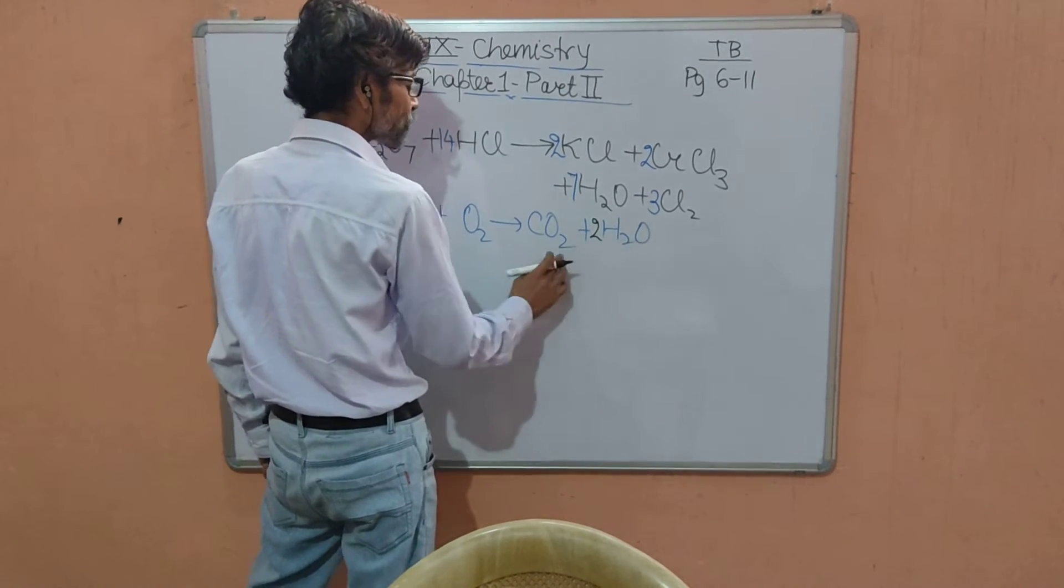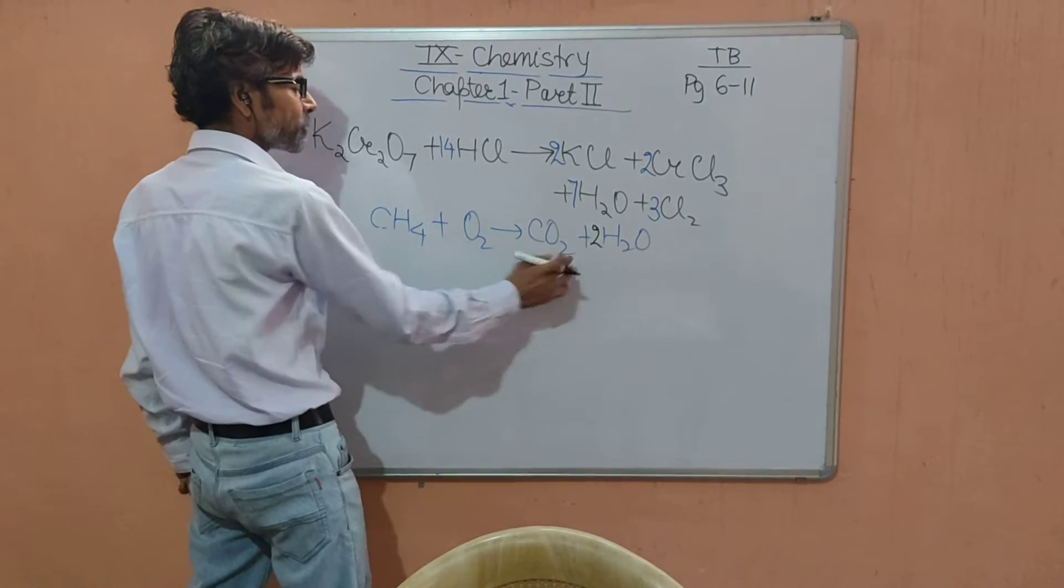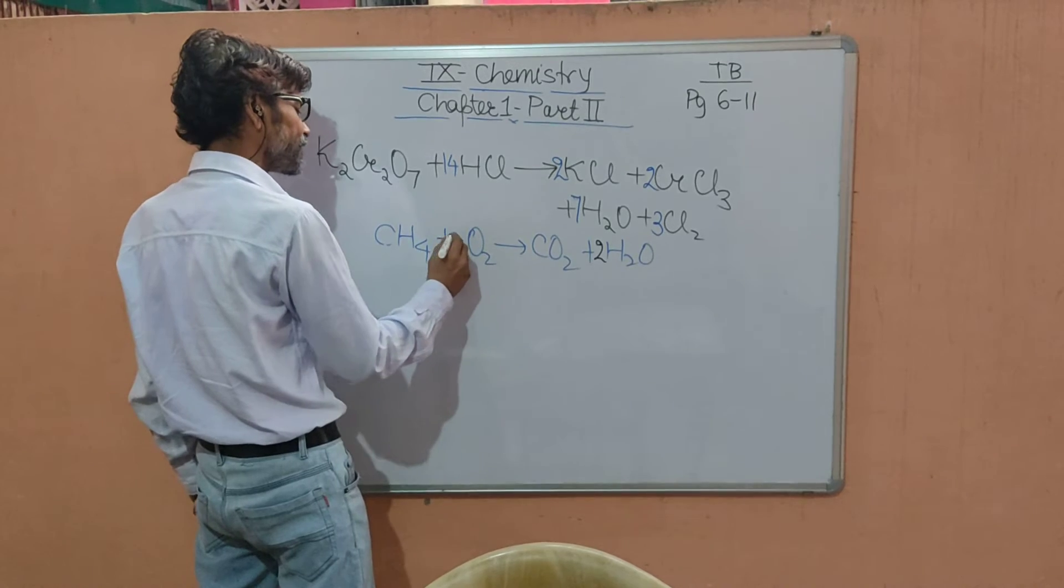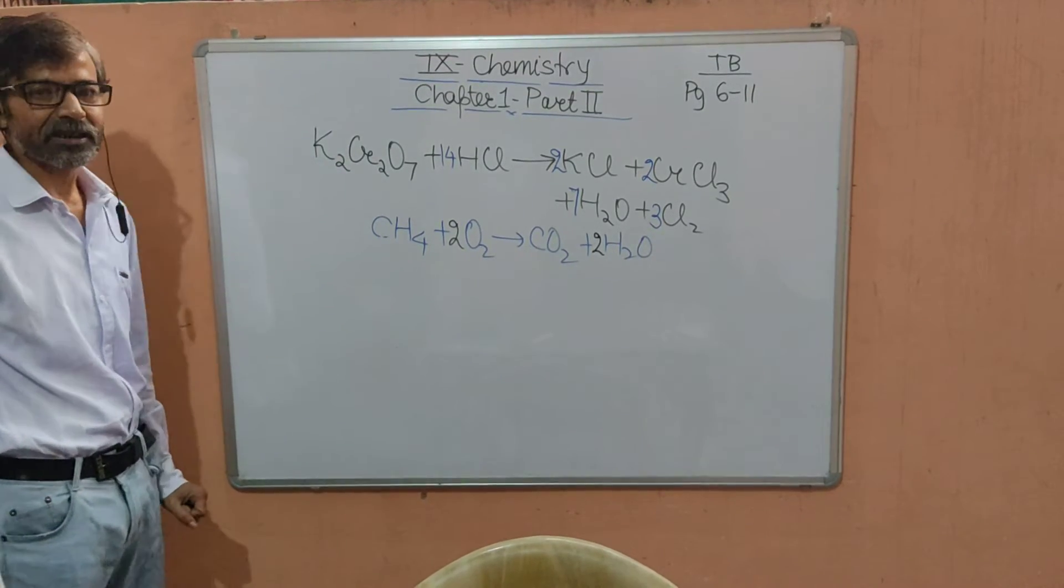But we find the oxygen, two plus two, four in the product side is not balanced in the reactant side. In the reactant side we multiply by two and the equation is balanced.